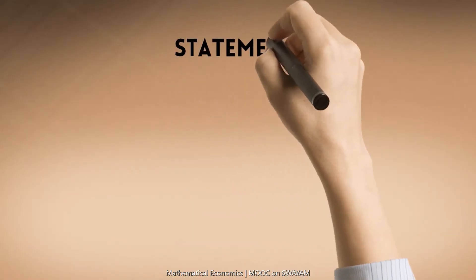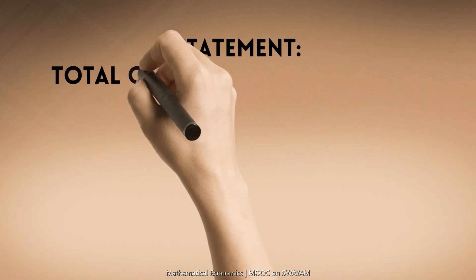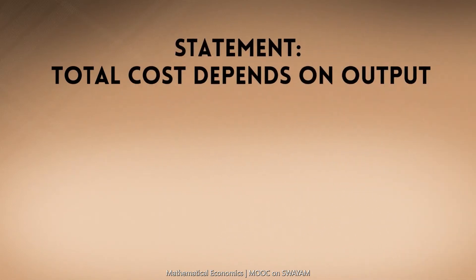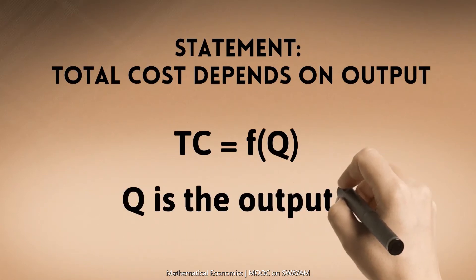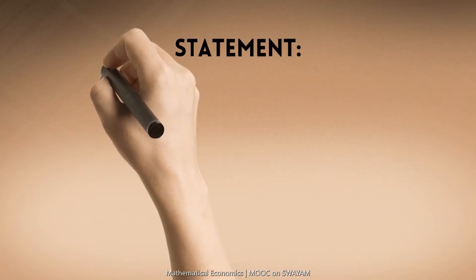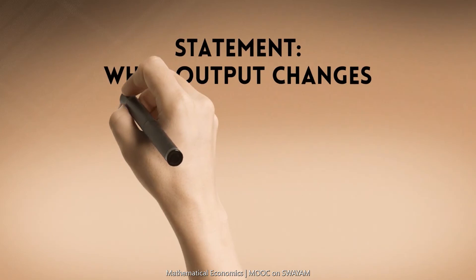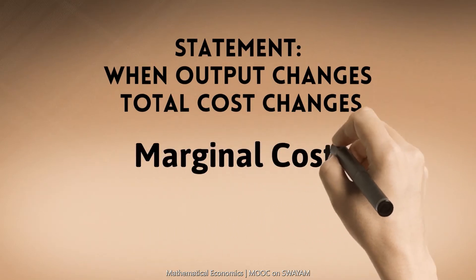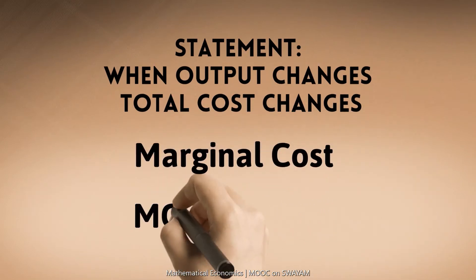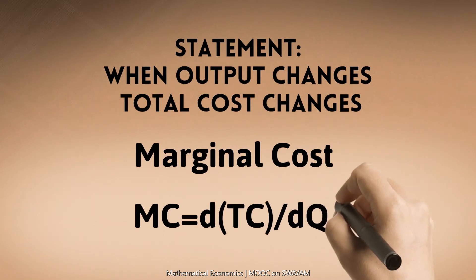The total cost of production depends on the quantity of output to be produced. Total cost can be expressed as TC = F(Q). When output changes, the total cost changes. The change in total cost per unit of output is called marginal cost and can be expressed as MC = d/dQ of TC.